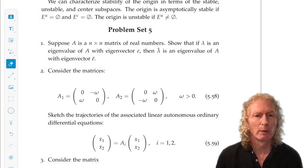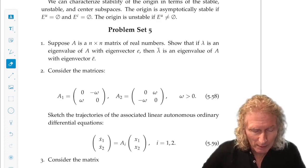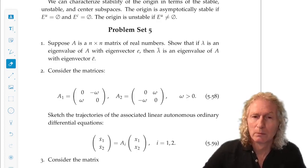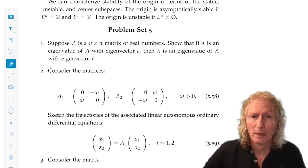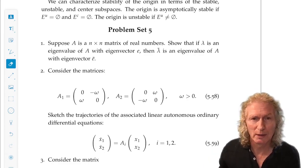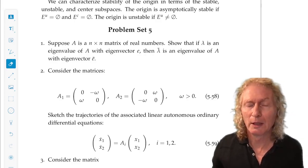The first problem is suppose you have an n by n matrix of real numbers. So if lambda is an eigenvalue of that matrix with eigenvector e, then I want you to show that lambda conjugate is an eigenvalue with eigenvector e conjugate.